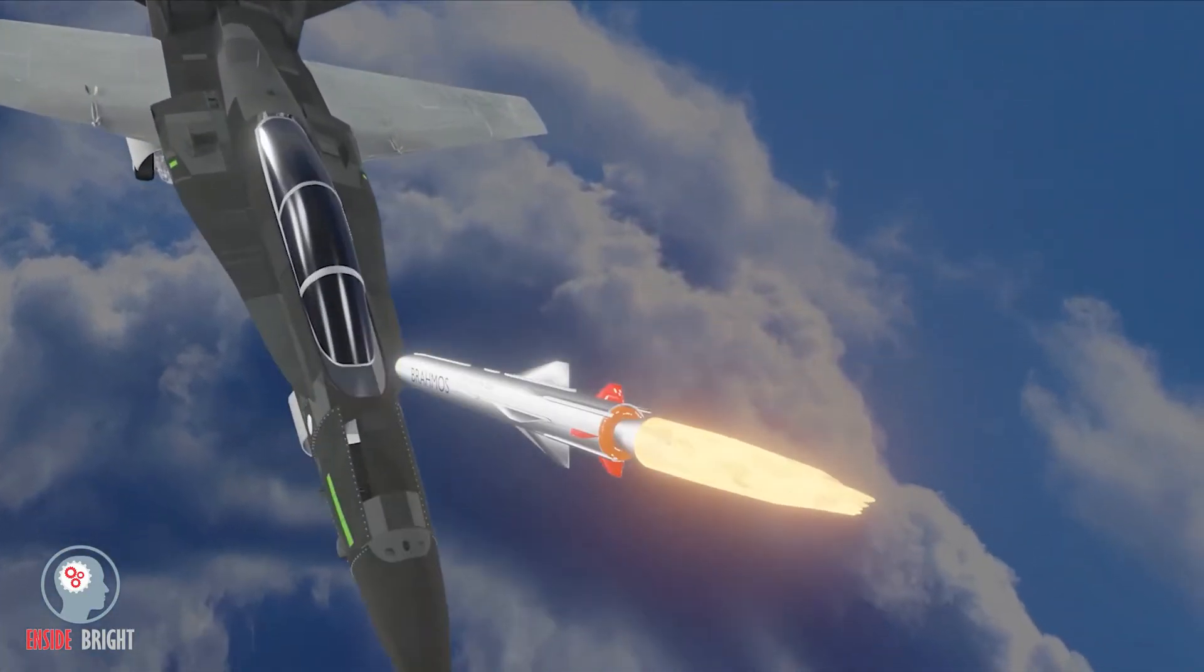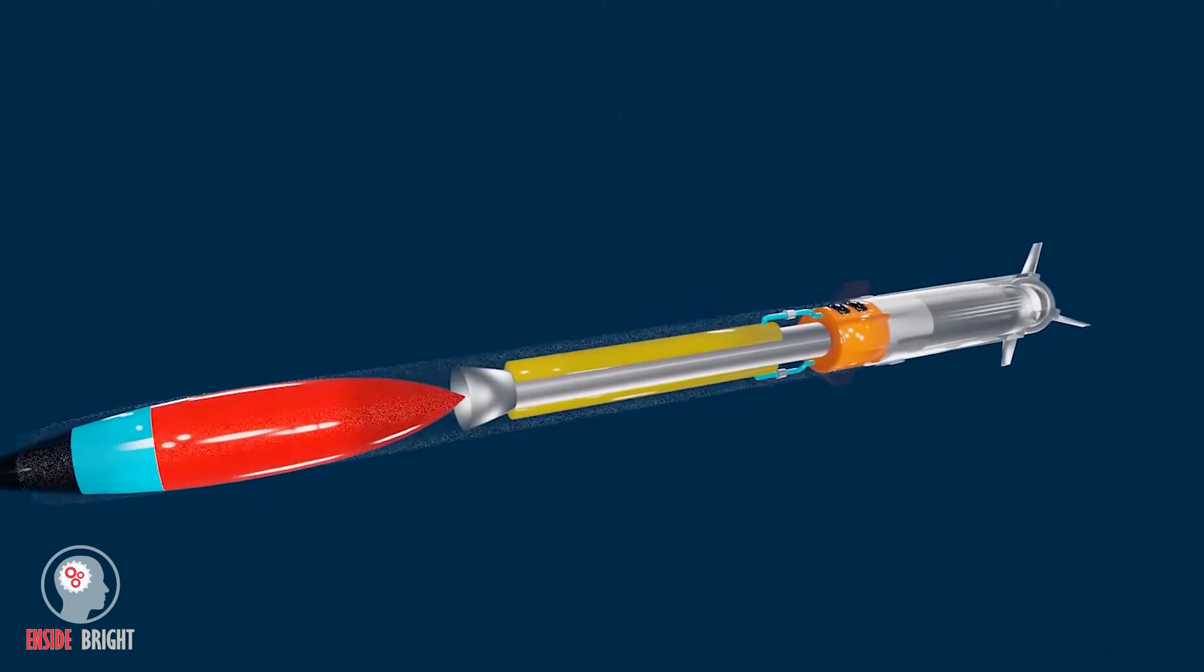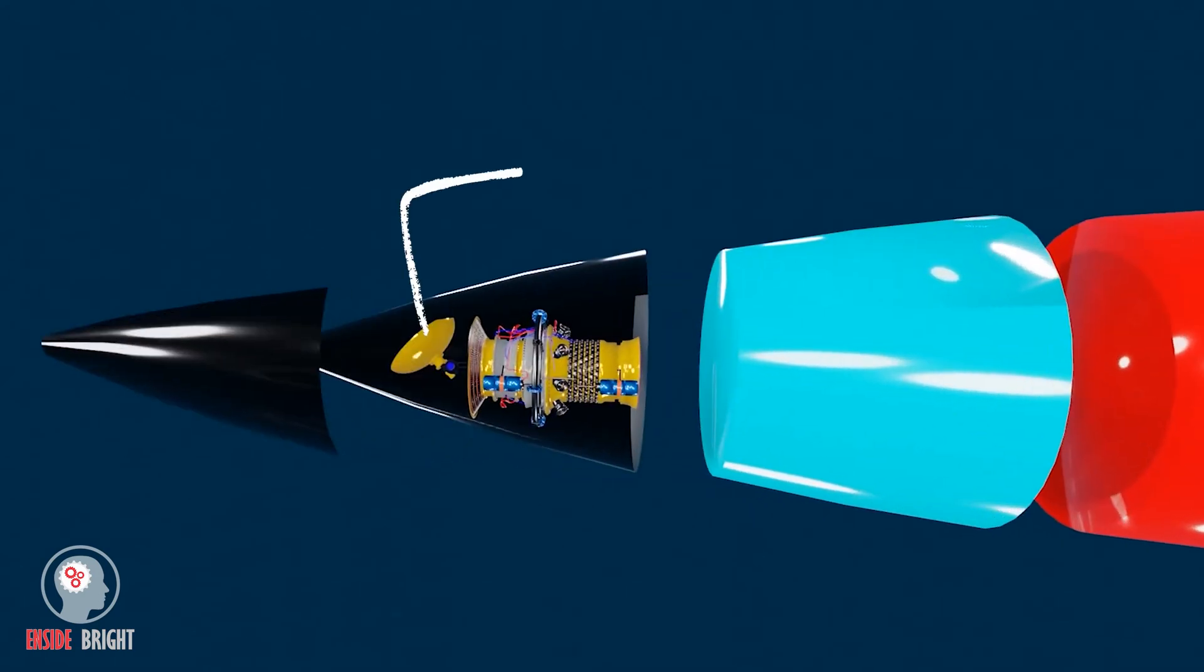In this video, we will learn how a missile works on an active radar system. The active radar homing is a missile guidance system with a transmitter and receiver that is mounted inside the missile.